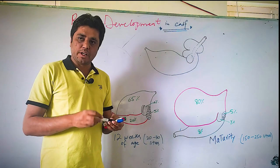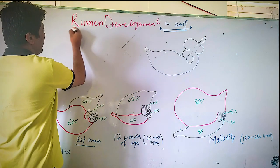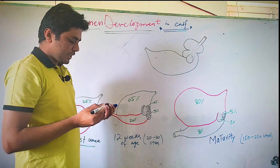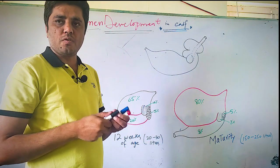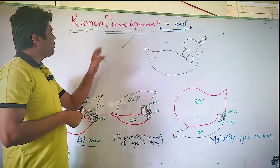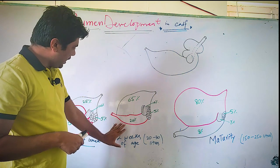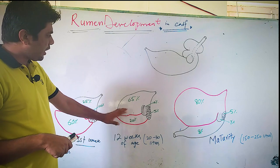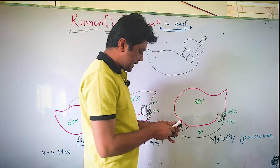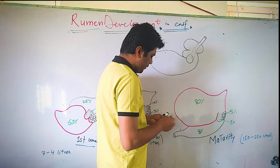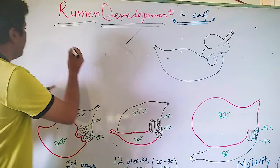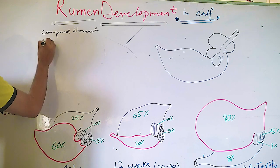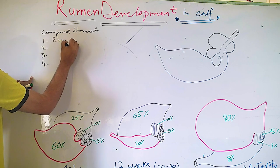Today we are going to talk about rumen development. This is one of the very important things related to the life of dairy cattle, dairy cows, and other ruminants. The rumen is one of the major parts of the ruminant stomach. The compound stomach — the ruminant stomach — has four compartments.